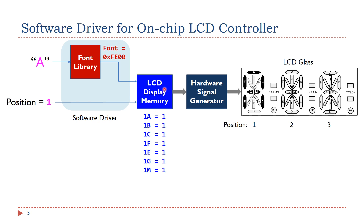Specifically, software will set the bits to one in the display memory that controls the on or off of the following segments: 1A, 1B, 1C, 1F, 1E, 1G, and 1M.